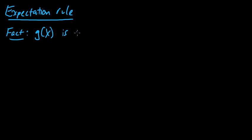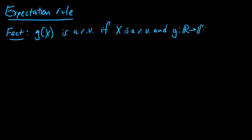g(x) is a random variable if x is a random variable and g is a real-valued measurable function on the real line. This is a technical condition — you don't need to worry too much about the measurable condition because most of the time, any function you encounter is going to be measurable. So the main idea is that a function of a random variable is itself a random variable.